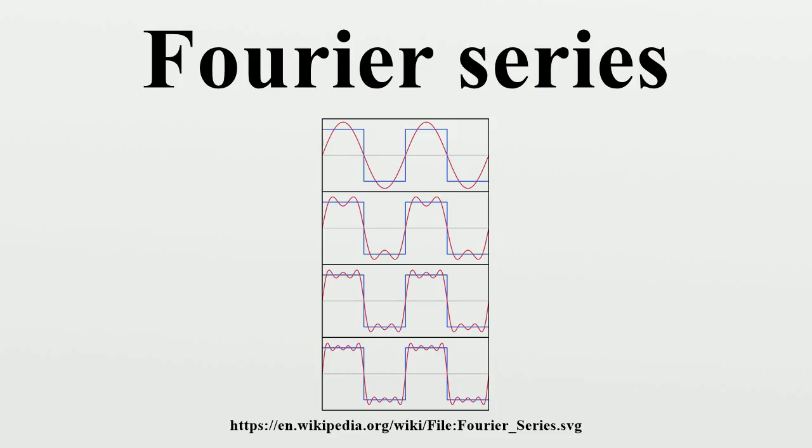This space is actually a Hilbert space with an inner product given for any two elements f and g. The basic Fourier series result for Hilbert spaces can be written as an orthogonal expansion. This corresponds exactly to the complex exponential formulation given above. The version with sines and cosines is also justified with the Hilbert space interpretation.